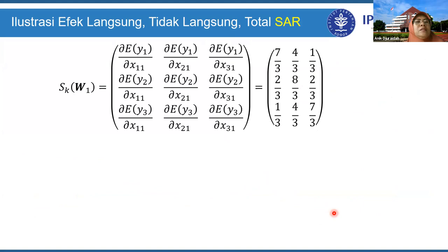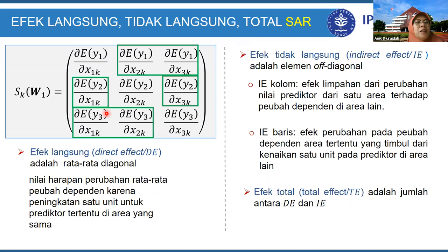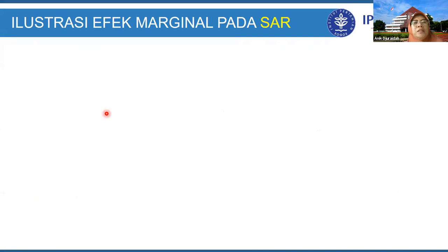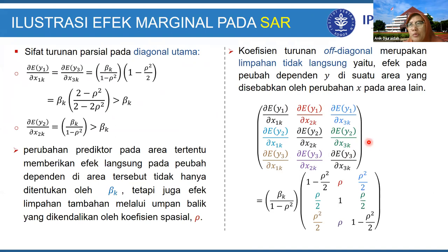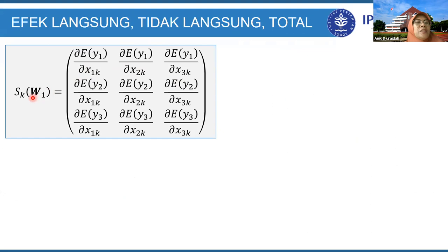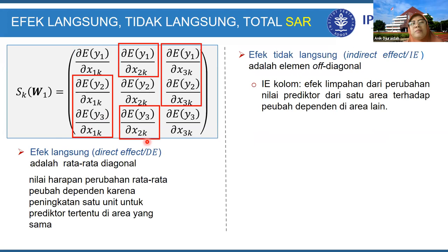Ada notasi dari pengarang untuk matriks turunan parsial ini yang dinotasikan sebagai S(W, K) atau S_K(W_1) — S dari W pada peubah X ke-K. Ini untuk memudahkan penulisan daripada menuliskan nilai harapan penuh. Elemen-elemen matriks S_K ini yang diagonal adalah direct effect dan off-diagonal adalah indirect effect.